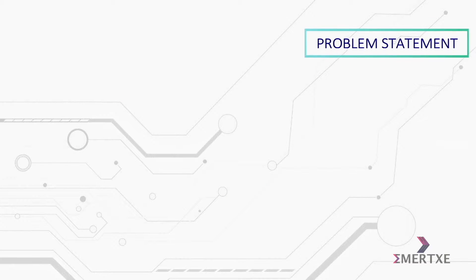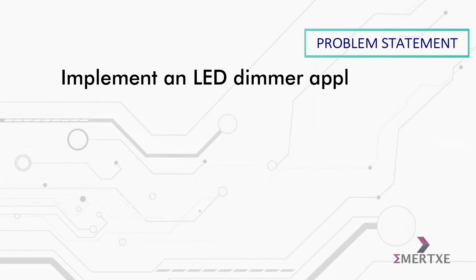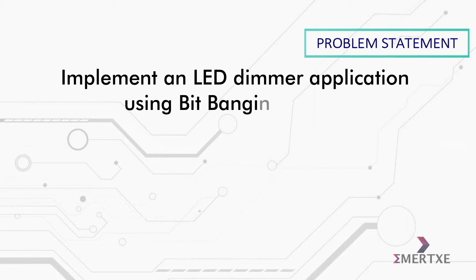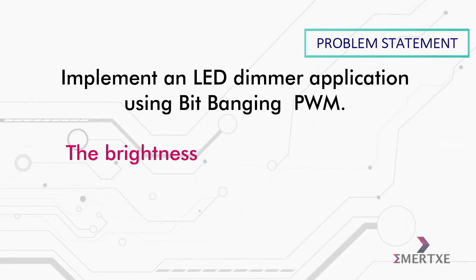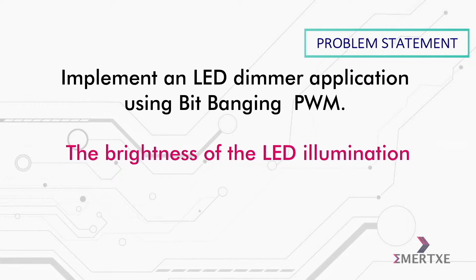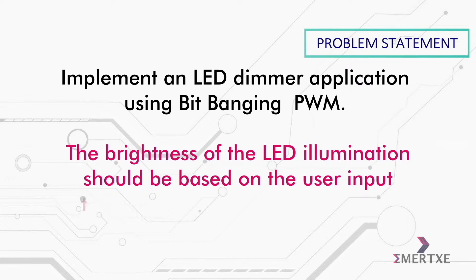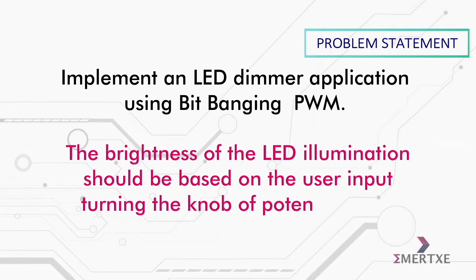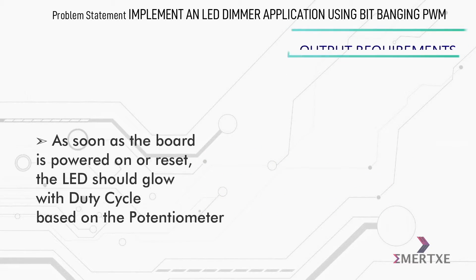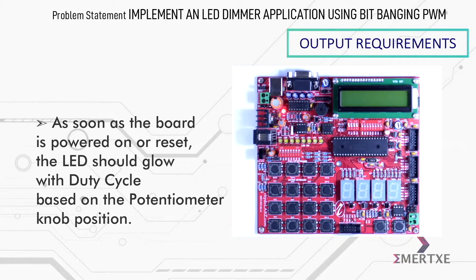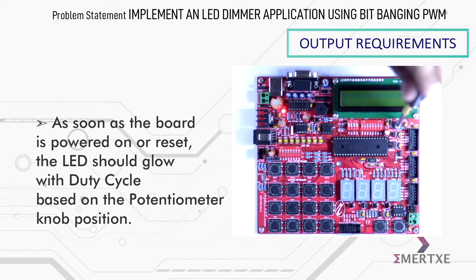In this assignment, you have to implement an LED demo application using bit-banging pulse width modulation. The brightness of the LED illumination should be based on the user input turning knob of a potentiometer. The LED should glow with a duty cycle based on the potentiometer knob position as soon as the board is powered on or reset.